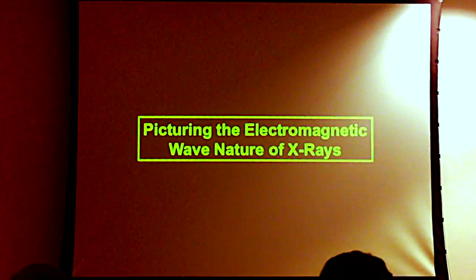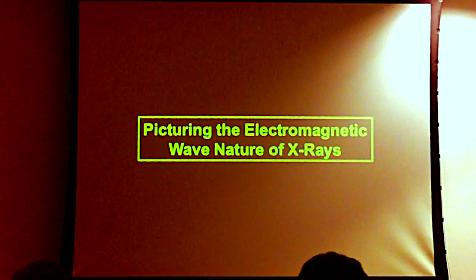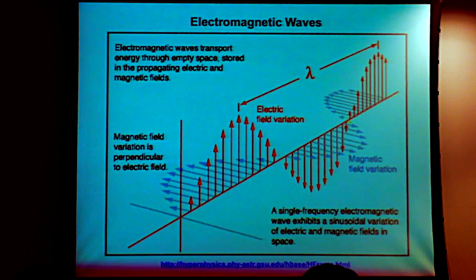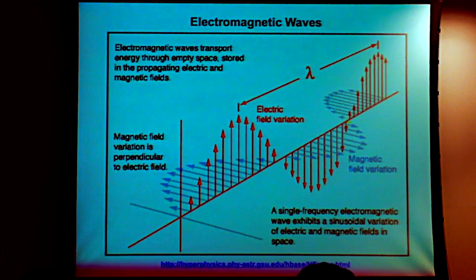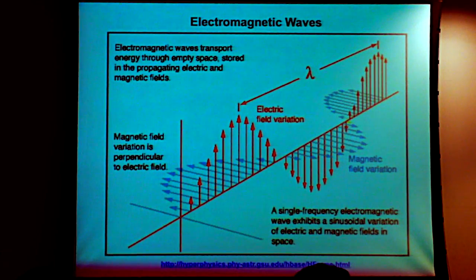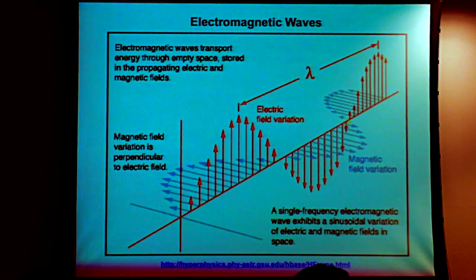Now a little bit about electromagnetic waves. You've no doubt seen this picture before: electromagnetic waves described as oscillations of electric field, depicted in red, and complementary oscillations of magnetic field, depicted in blue. These are waves of equal frequencies and they are in phase, but they have orthogonal amplitudes of vibration.